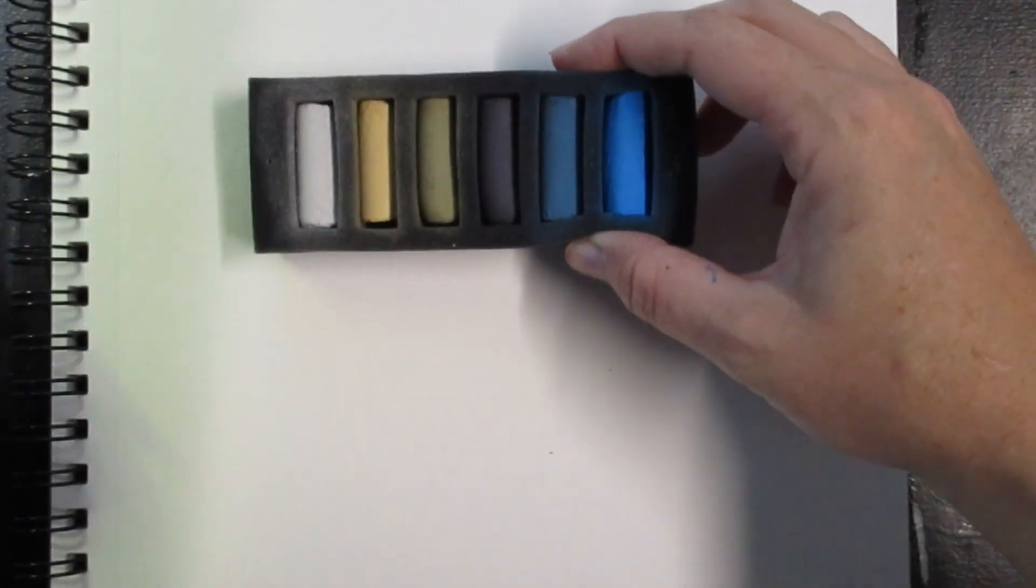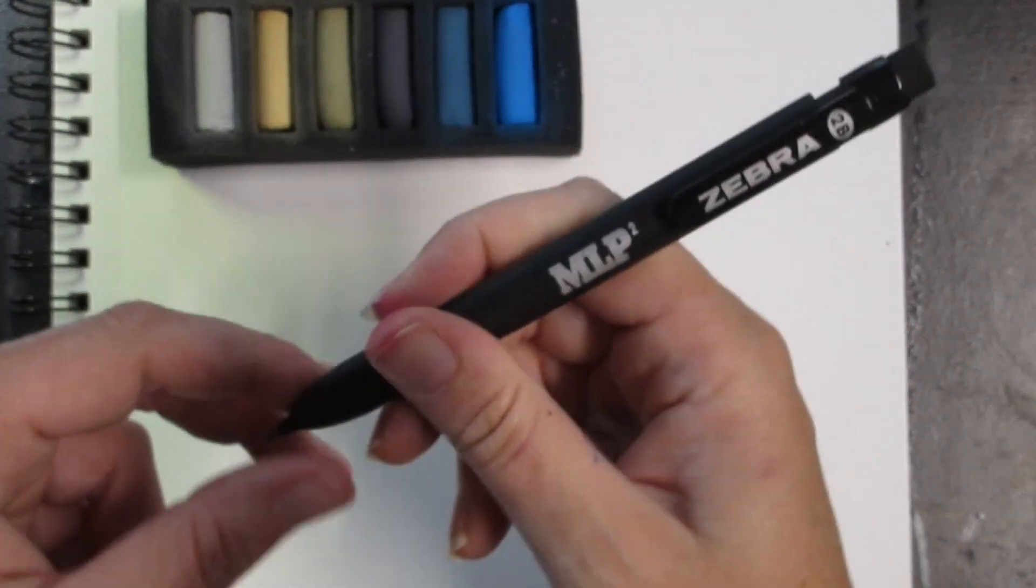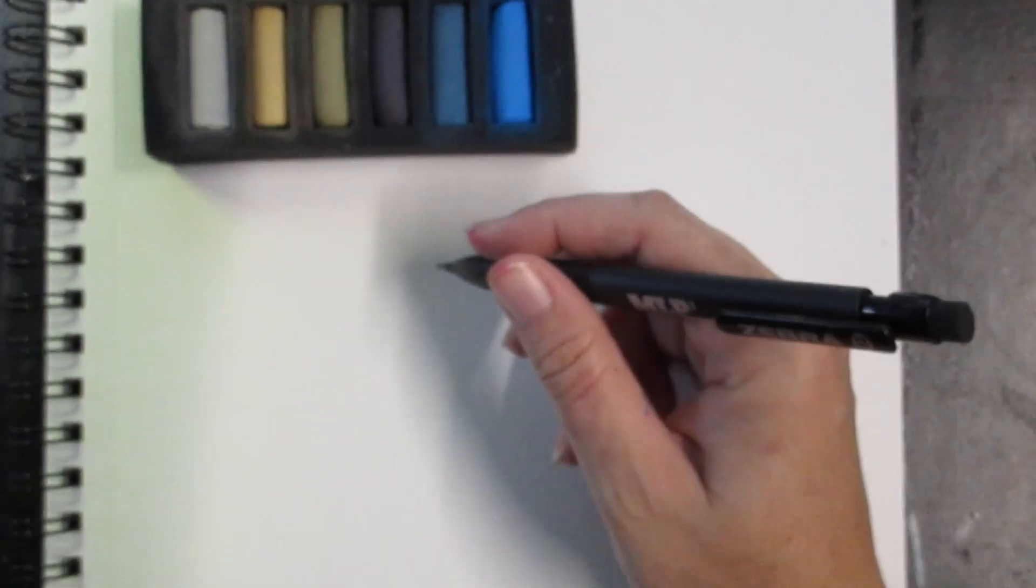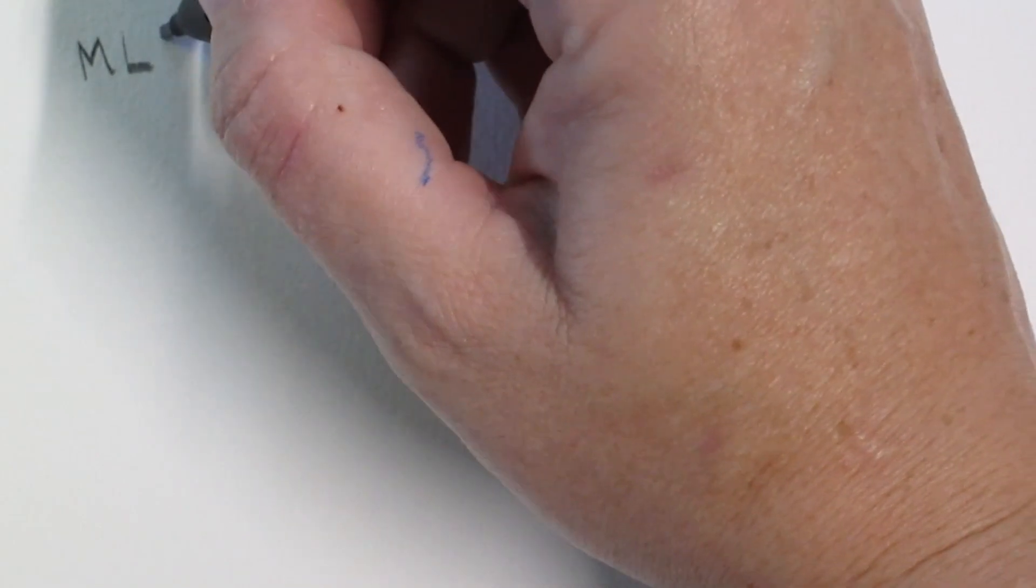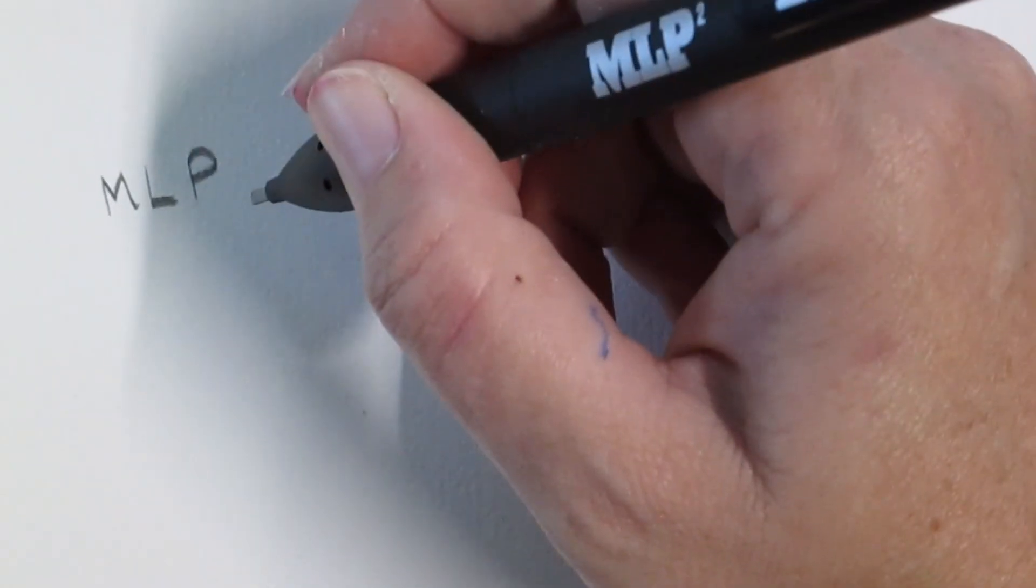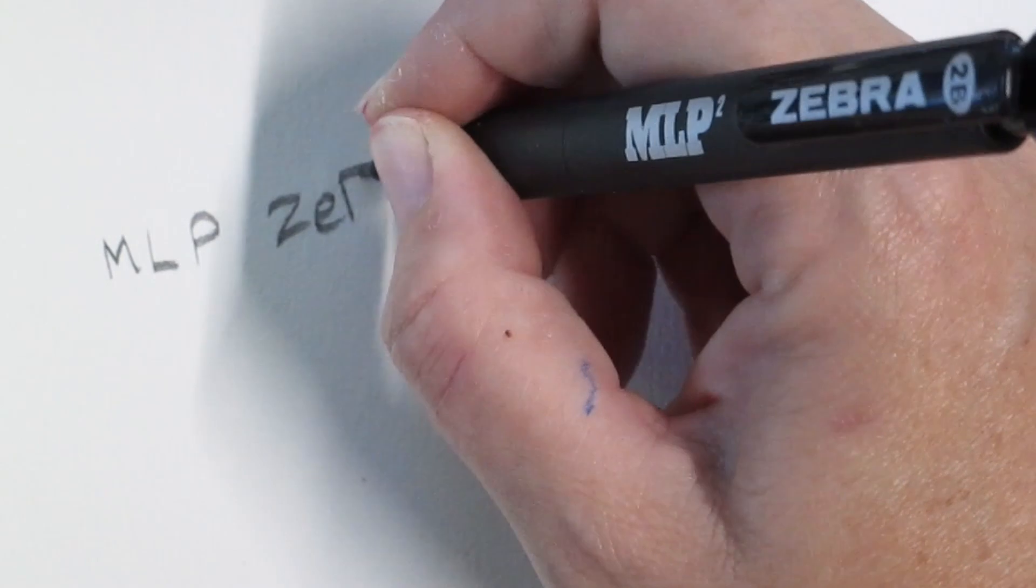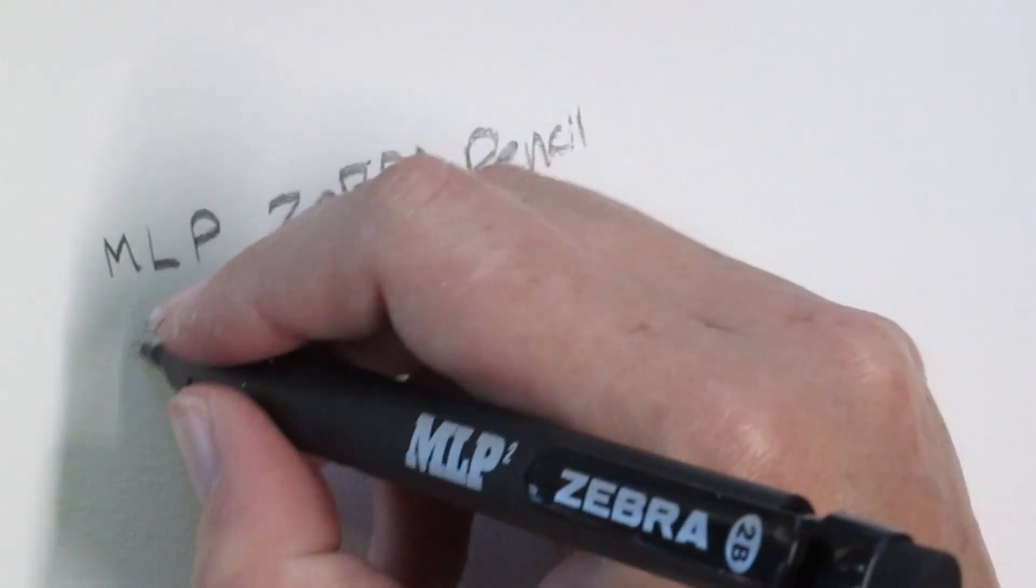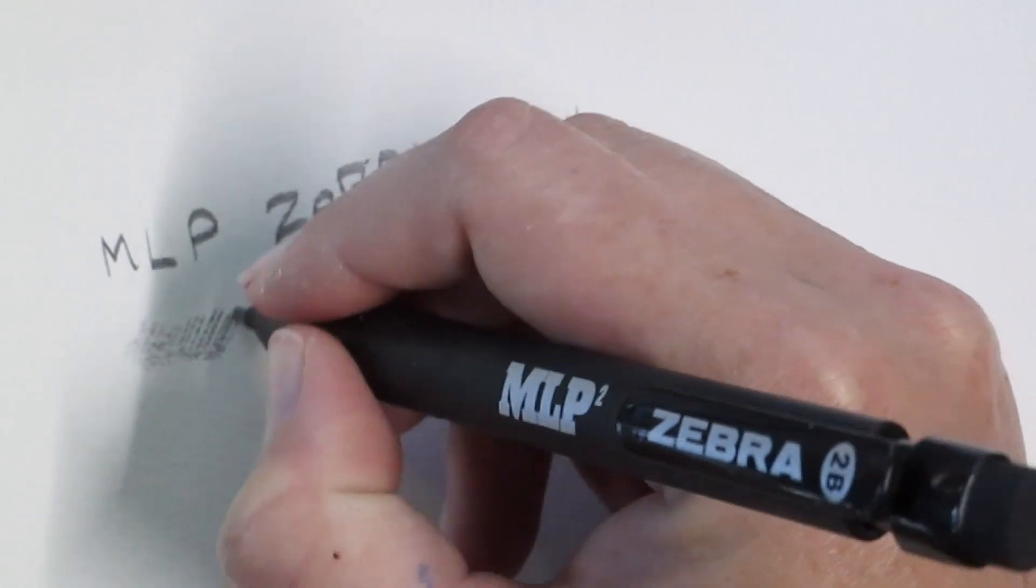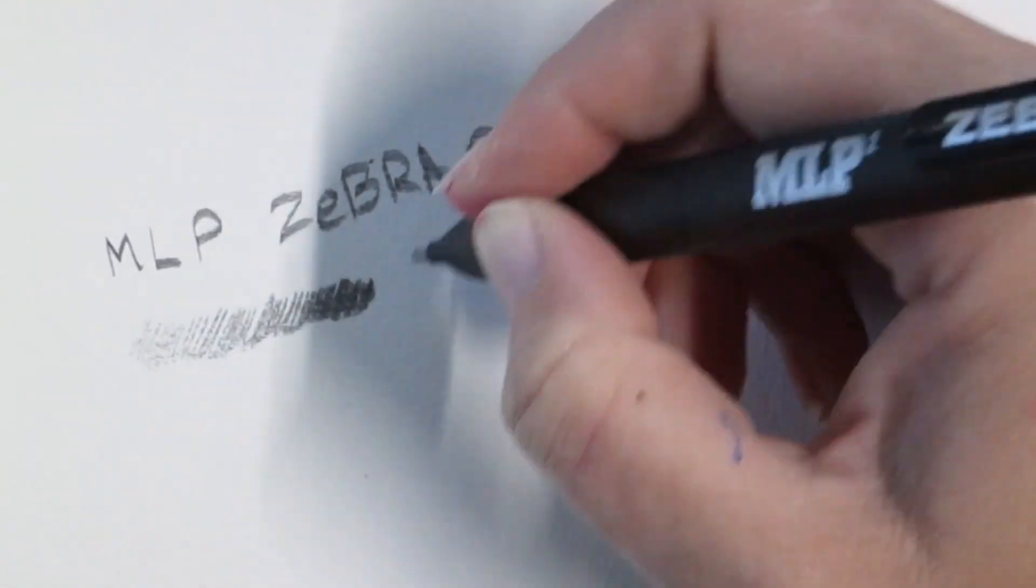So let's see about swatching some of these things. I think I'll do the pastels last, I'm kind of excited about this pencil. MLP, don't know what it stands for. Zebra. Zebra's a good brand, I like them as a pen and pencil brand. I like to shop around on Jet Pens and get a lot of interesting stuff. This is a 2B pen so it's kind of soft but not too soft.